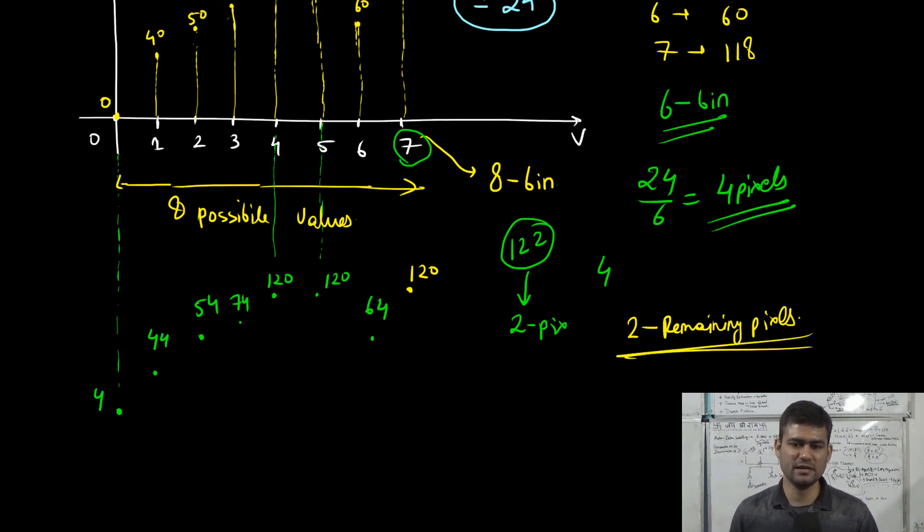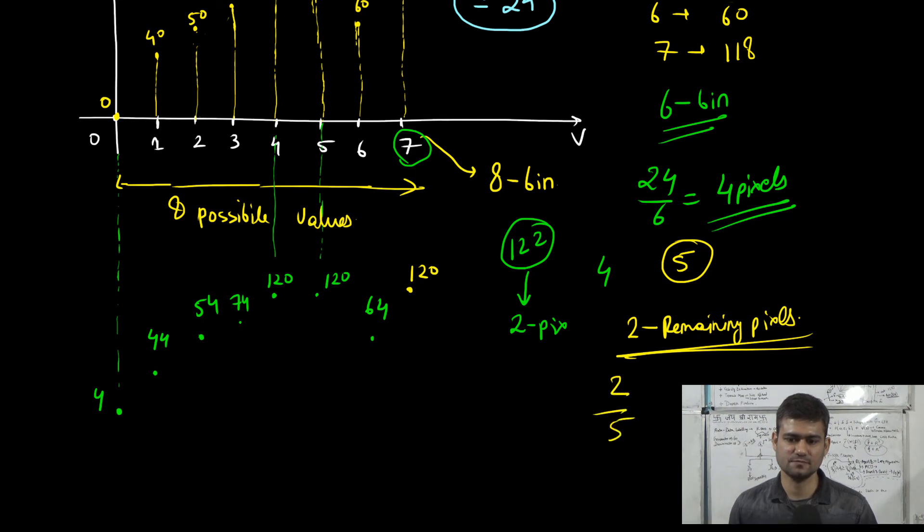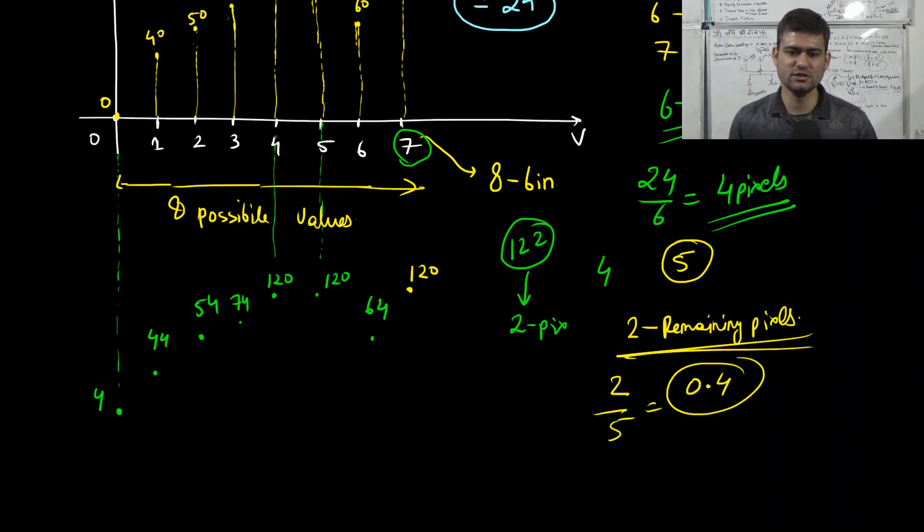Now the number of remaining bins are just 5. So we will redistribute these pixels in 5 bins, which gives us 0.4. Each of the bins will receive less than 1 pixel. So we will just redistribute all these pixels in just one single bin. We can scan the histogram again and see which of these bins can take these two additional pixels. In this case, the first bin that we scanned will qualify. The total number of pixels in this bin would be now 6. So this is what a redistribution step would look like.